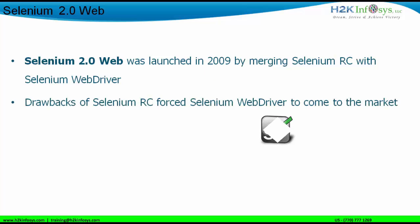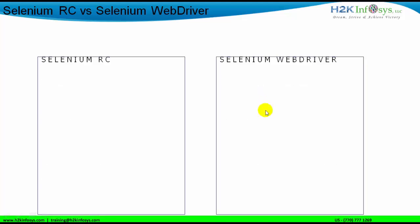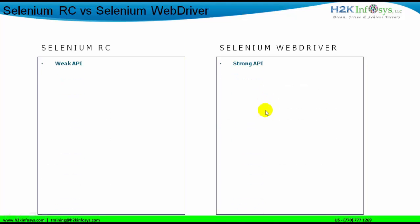Why was Selenium RC replaced with Selenium WebDriver in 2.0? That was because of the drawbacks of Selenium RC. The next slide covers the differences between Selenium RC and Selenium WebDriver, explaining why RC was replaced. The first difference: Selenium RC was a weak API, whereas Selenium WebDriver is a strong API. A stronger API means more methods, more classes, and more interfaces.